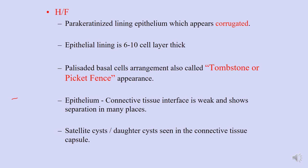Palisading means the basal cells — which are columnar — are arranged in a parallel manner with their nuclei aligned. This gives the picket fence or tombstone appearance. This palisading arrangement of basal cells is classical in OKC. Additionally, the epithelium-connective tissue interface is weak in this cyst, meaning the epithelium easily rips off from the cyst wall.